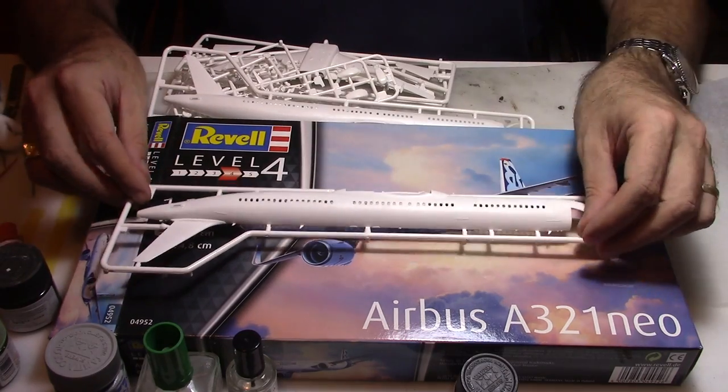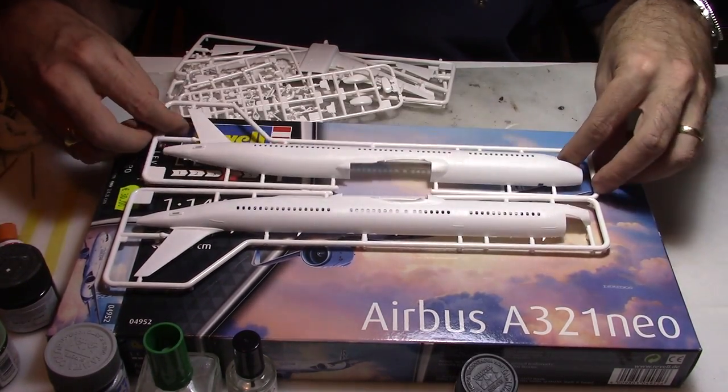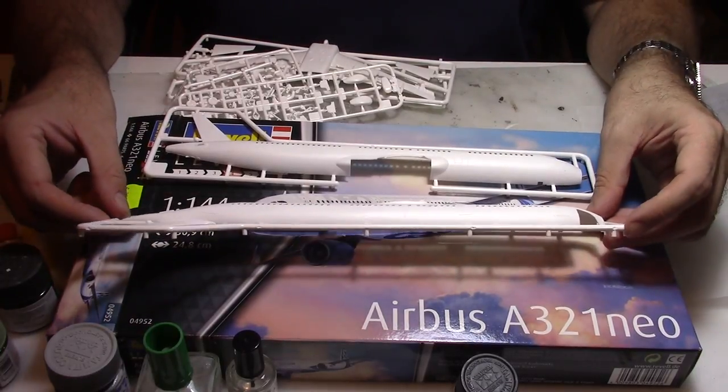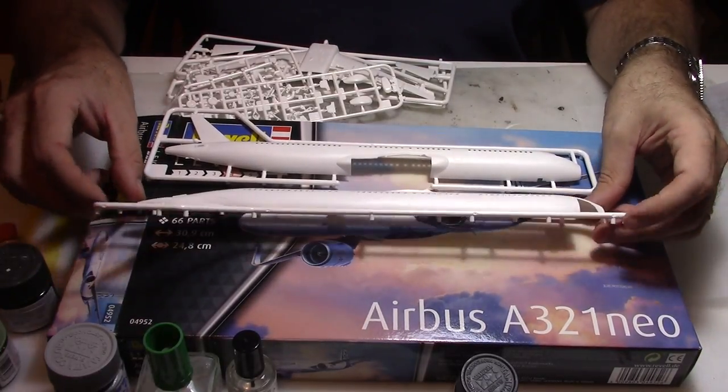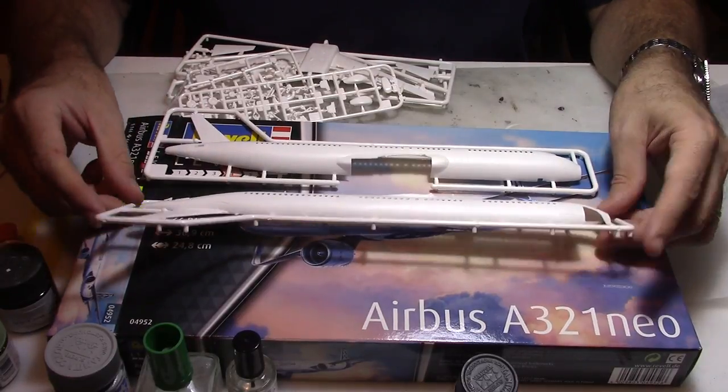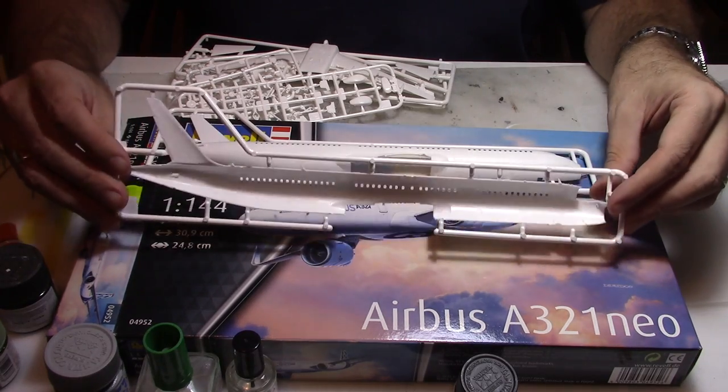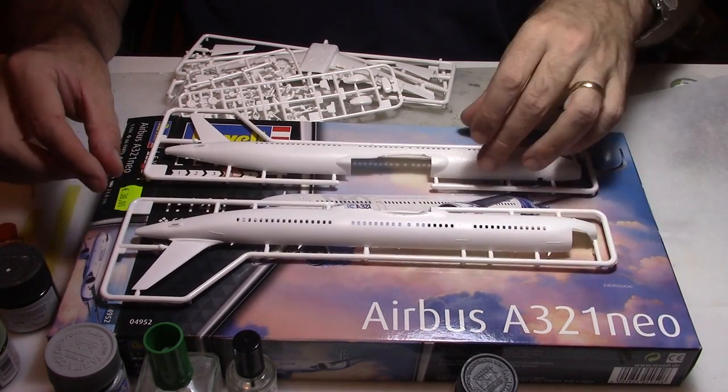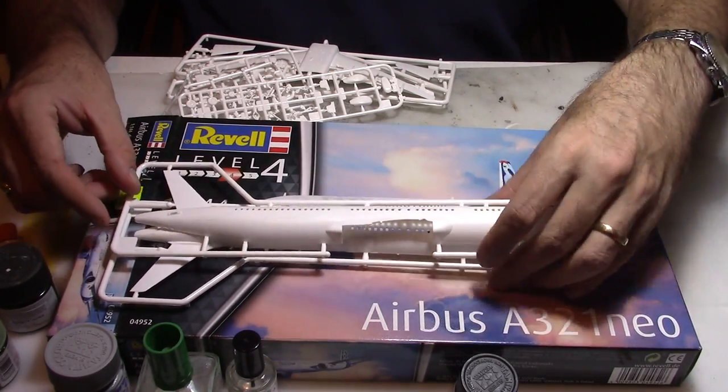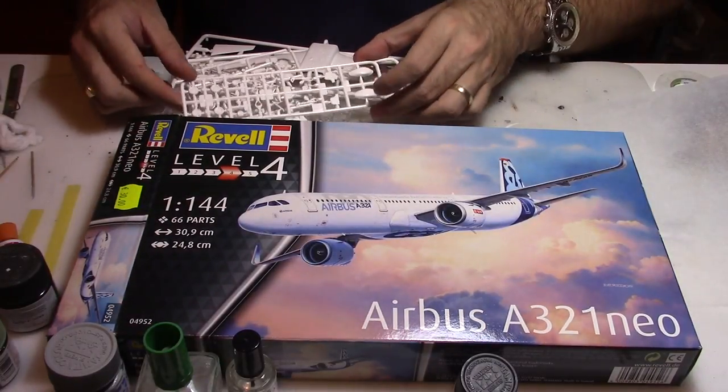The fuselage comes in two parts and it's a different tooling from the old A320. As you can see, the rudder is separated and the nose radome is on a different part as well. It's a different tooling from the older 320 classic that we have.